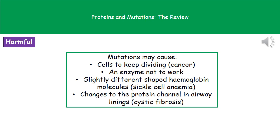Mutations can be quite harmful to an organism. The first harmful example is if the mutation makes cells keep dividing so they lose control of division — that's basically what cancer is. The second one is that it might stop an enzyme from working, because if we change one of the amino acids we can change the shape of the active site so it no longer works.